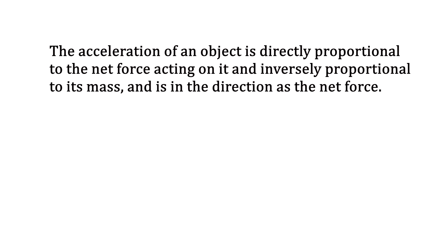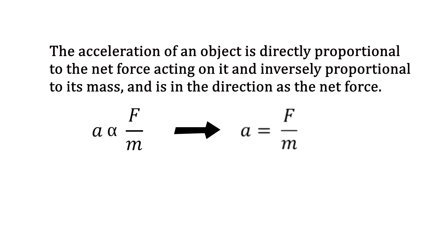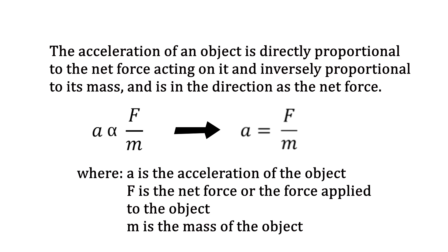Acceleration is directly proportional to the net force over the mass of the object. This can be expressed in an equation: A = F / M, where A is the acceleration of the object, F is the net force applied to the object, and M is the mass of the object. This is called Newton's second law of motion, or the law of acceleration.